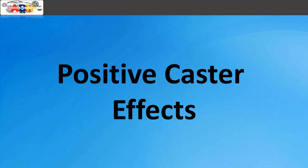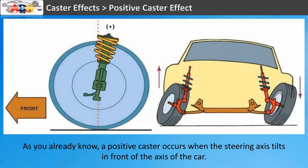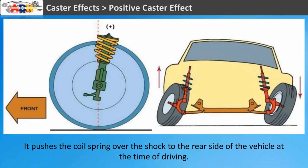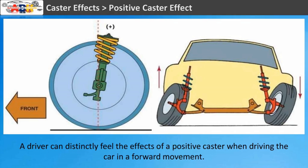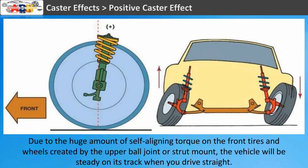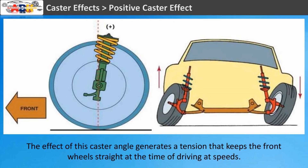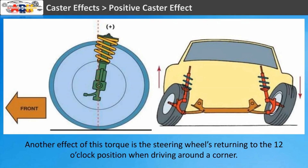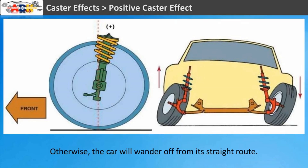A positive caster occurs when the steering axis tilts in front of the axis of the car, pushing the coil spring over the shock to the rear side of the vehicle while driving. A driver can distinctly feel the effects of positive caster when driving forward. The huge amount of self-aligning torque on the front tires and wheels — created by the upper ball joint or strut mount — keeps the vehicle steady on its track when driving straight. This tension keeps the front wheels straight at speed, and the steering wheel returns to the 12 o'clock position when driving around a corner. Otherwise, the car will wander off from its straight route.